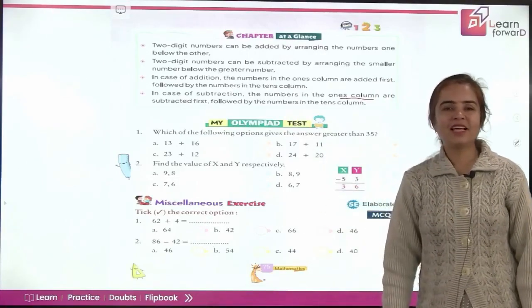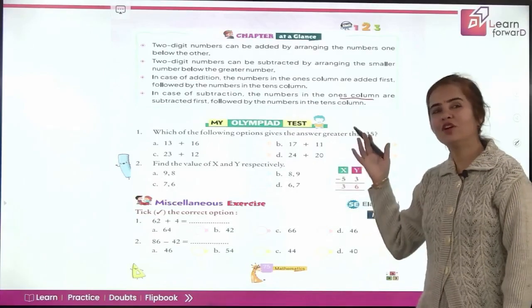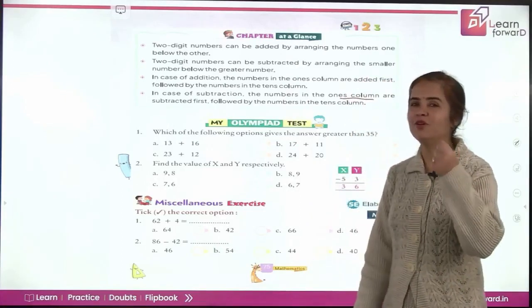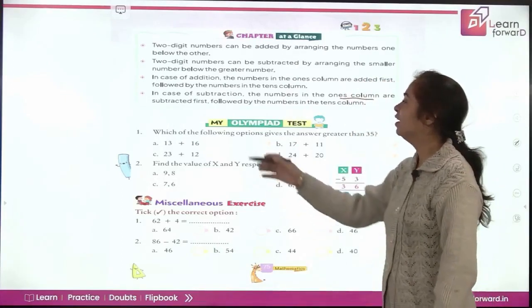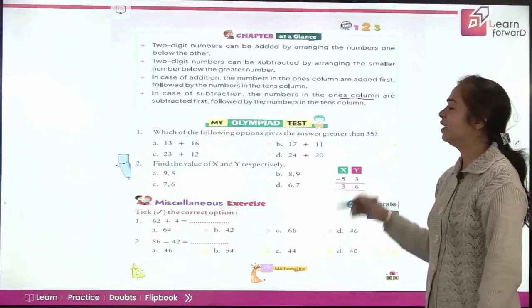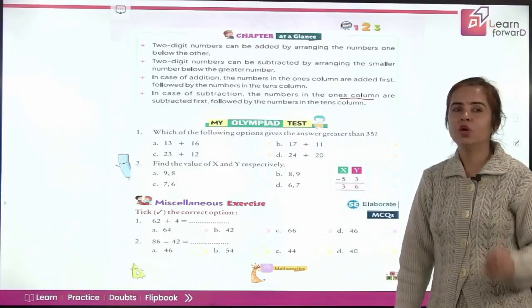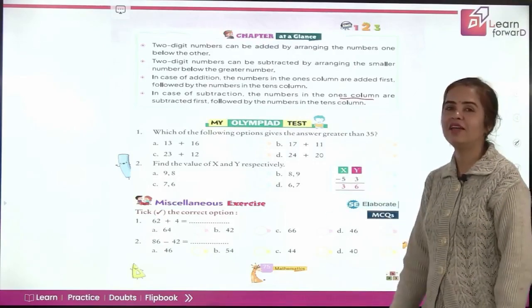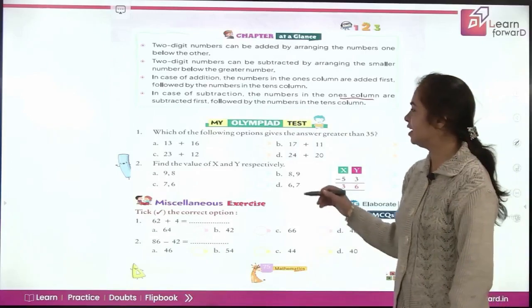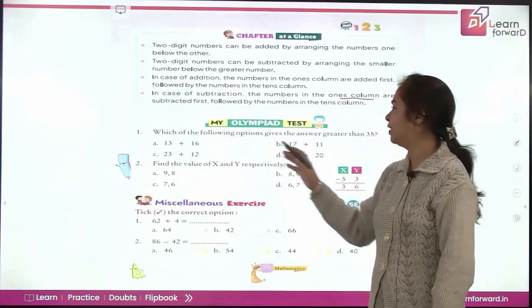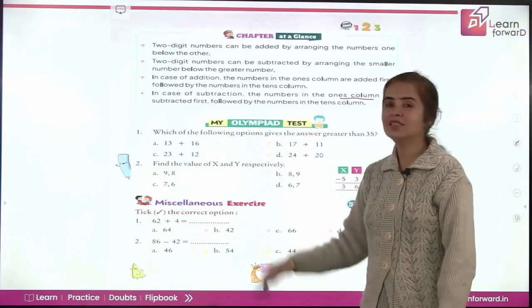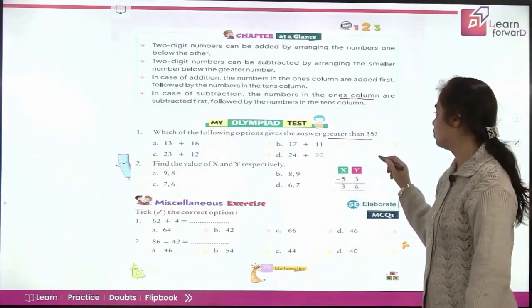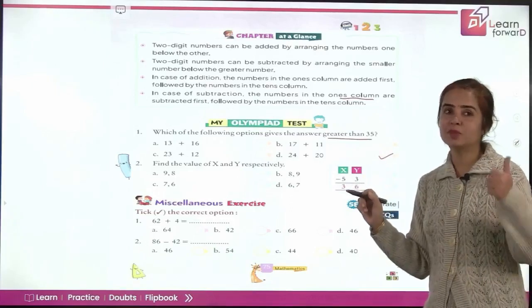Yes, it's your exercise time now. And for the Maths champions you have the Olympiad test. Let's see how many of you can crack Olympiad here. Which of the following options gives the answer greater than 35? Quickly add and tell me. Which one will give more than 35? Oh, you are right there with the answer. Let me check. This is 29. This is 28. This is 35. But we want greater than 35 and here you get 44. So you got it correct. That's brilliant of you.